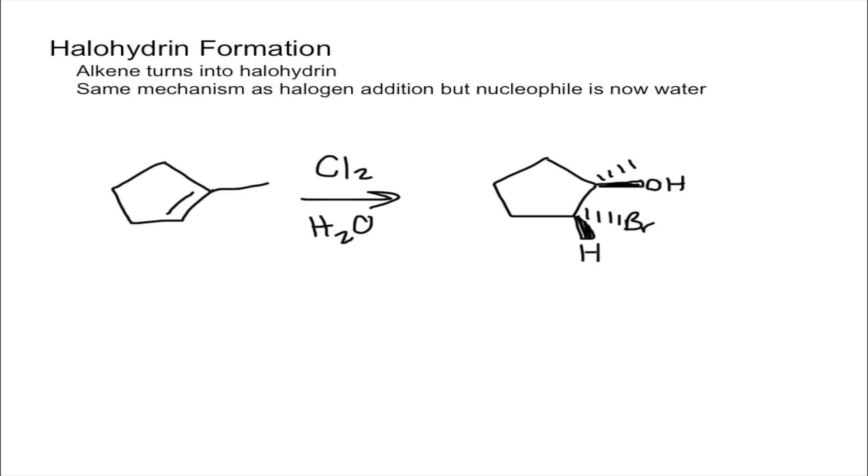So in this video I'm going to talk about the halohydrin formation and this is essentially adding on an X where the X is a halogen as well as an OH.